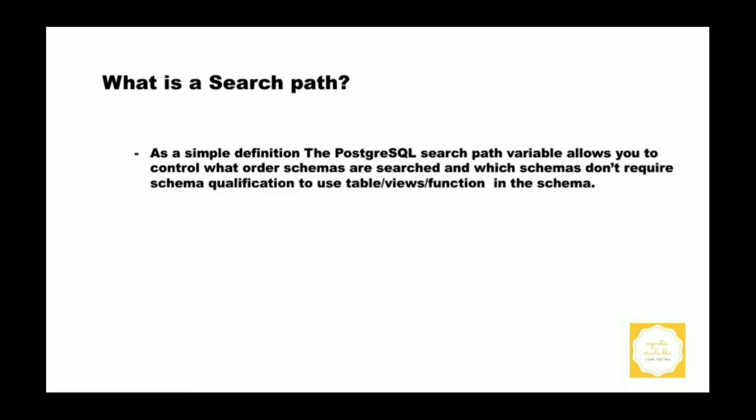If you look at the Postgres cluster, it has multiple databases, users, schemas and tables. Even though if you look at a schema it contains multiple users and database objects. As a simple definition, the PostgreSQL search path variable allows you to control what order schemas are searched and which schemas don't require schema qualification to use tables, views, or functions in the schema.